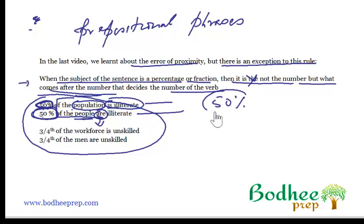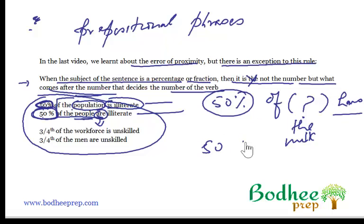So 50% itself is not enough. 50% of what? And when you have this answer, then you can go ahead and fix the verb. So 50% of, let's say, the milk. And you will say that 50% of the milk has gone bad, has leaked. But 50% of the boys are good for nothing. Right?